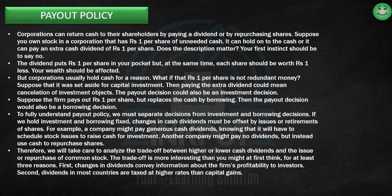Corporations can return cash to their shareholders by paying them a dividend or by repurchasing shares. Paying a dividend means that whatever you have bought, you get a return — like interest, you have a dividend on the shares.